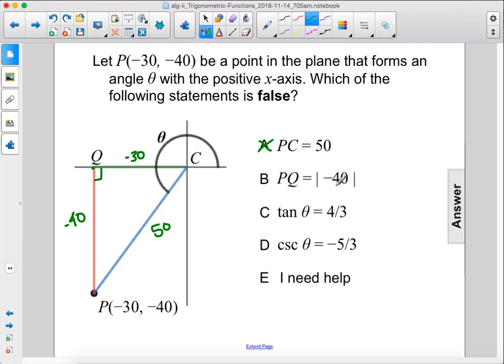PQ equals the absolute value of 40, so PQ, that's the length of PQ, is 40. Lengths aren't negative, so you would have the absolute value signs here to show that it is a positive value of 40. This is true, so let's cancel it out.